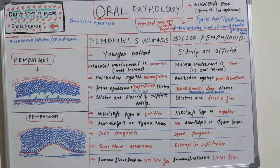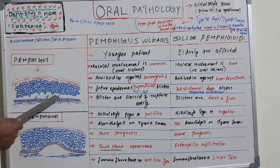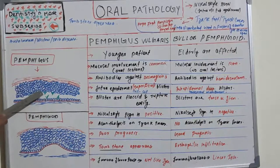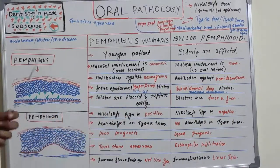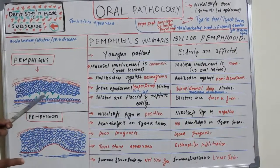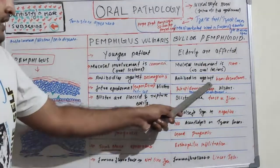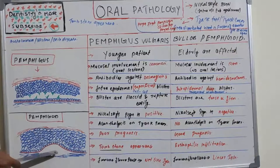Regarding the autoantibodies: in pemphigus, antibodies act against desmoglein 3. Desmoglein 3 are the fibers which connect the cells together, so when they are attacked, the cells separate and blisters form. Whereas in bullous pemphigoid, the antibodies act against hemidesmosomes — the structures which keep the basement membrane and epithelium close together — causing sub-epidermal separation.